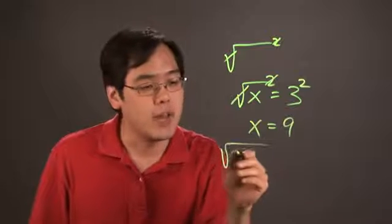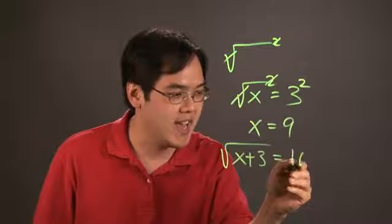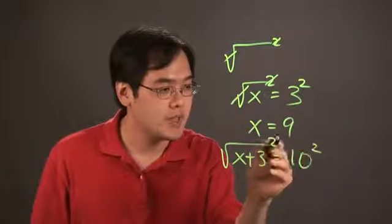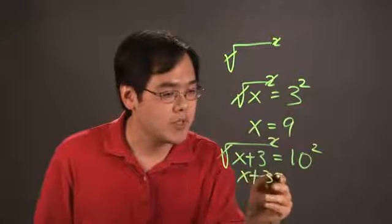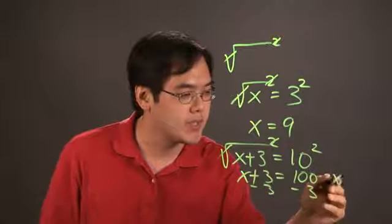Now, if there's something a little more complicated, you have square root of x plus 3 equals 10. To get rid of the square root, you square both sides. The square and the square root are gone. You're left with x plus 3 equals 100. Then to solve for x, just subtract 3 on both sides. You have x equals 97.